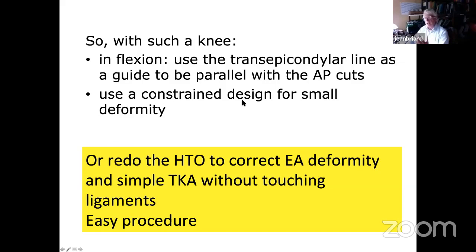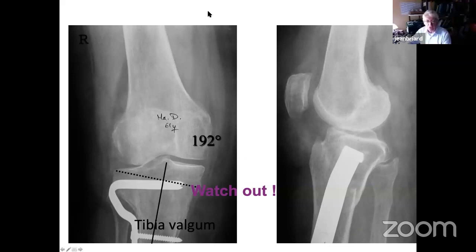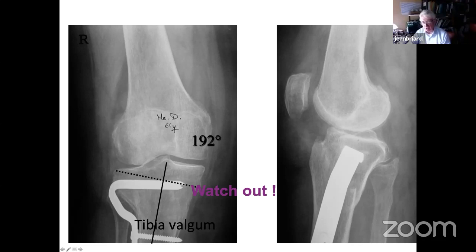The age of the patient is very important in choosing the method, but most of the time it is very simple — you have to redo the HTO, keep the joint with good ligaments, and it's an easy procedure. When you're used to it and you see this situation, the thought should be: I can't cut so much bone, I can't lengthen all these lateral structures — the osteotomy is the simple, quite easy solution.